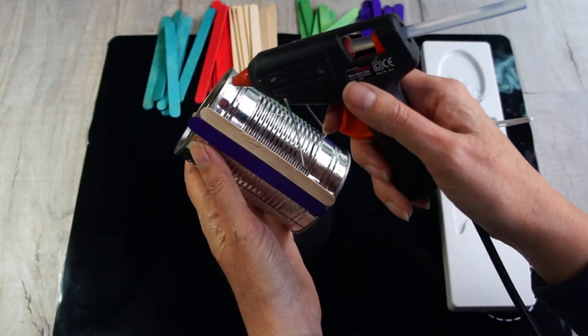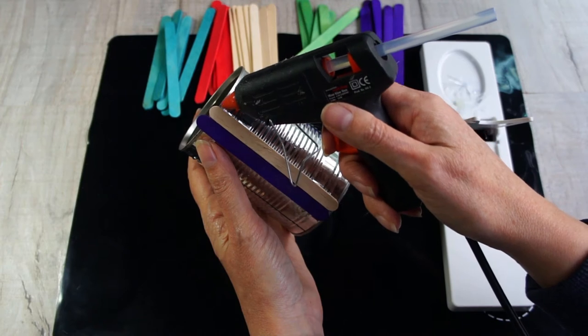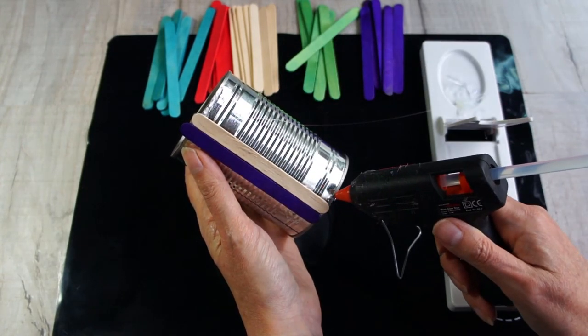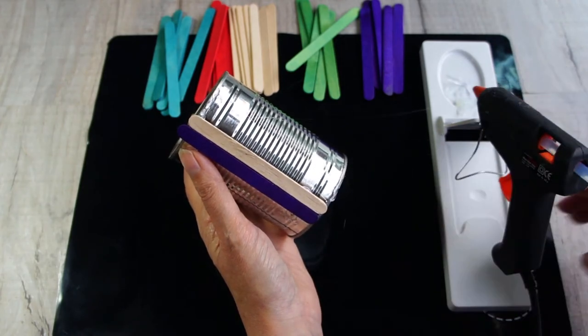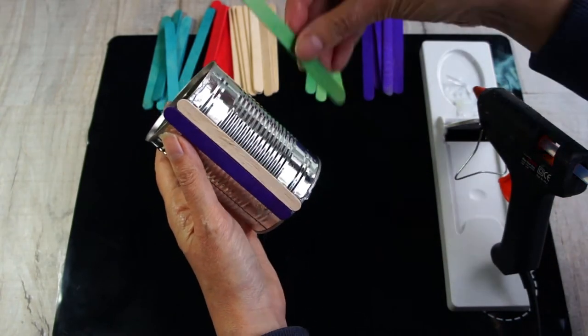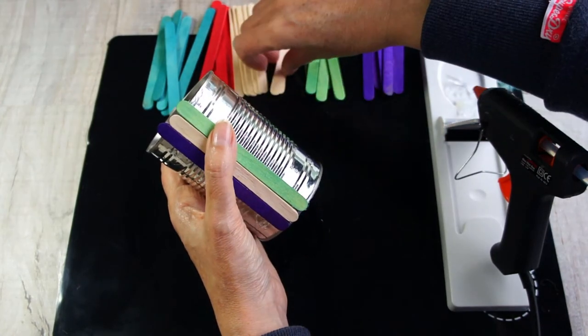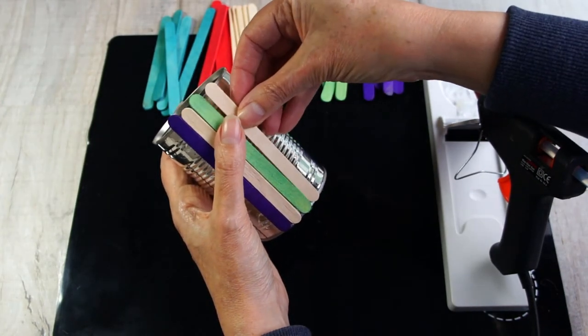You'll notice that I stand the tin can down onto the table. That's to make sure I get them all exactly the same height. I just press it so that they all just touch the table. The last thing we want is them up and down and higgledy-piggledy all over the place, unless that's the design you're going for.